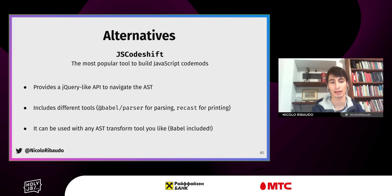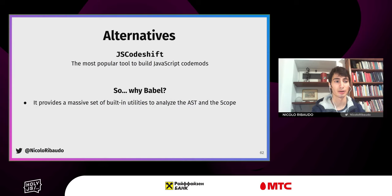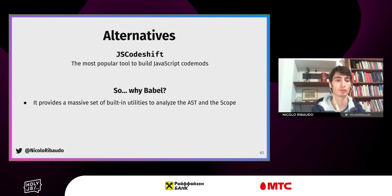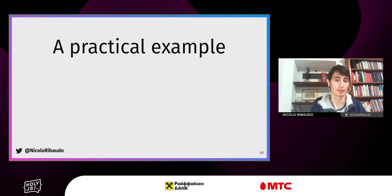You can also use jscodeshift with codemods built using Babel — it's not really an alternative, it's something you can use at the same time. Why did I choose Babel? It provides a massive set of built-in utilities to analyze the AST and scope, so you can get all the variables defined inside a given function and transform code based on that. You can also reuse the same knowledge to modify your build process with custom plugins, since codemods created using Babel are really just normal Babel plugins.